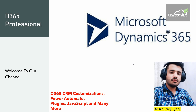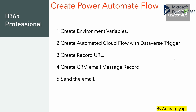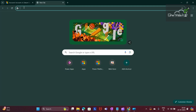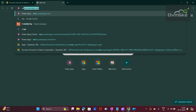Hello everyone, welcome to our channel Dynamics 365 Professional. In this video we are going to create a Power Automate flow. We would be creating environment variables, an automated cloud flow with a Dataverse trigger, create record URL, create a CRM email message record, and then send the email. Our use case scenario is when an account is created in the CRM, send an email to the owner of the account with the record URL of the account. Now let's jump to make.powerapps.com.